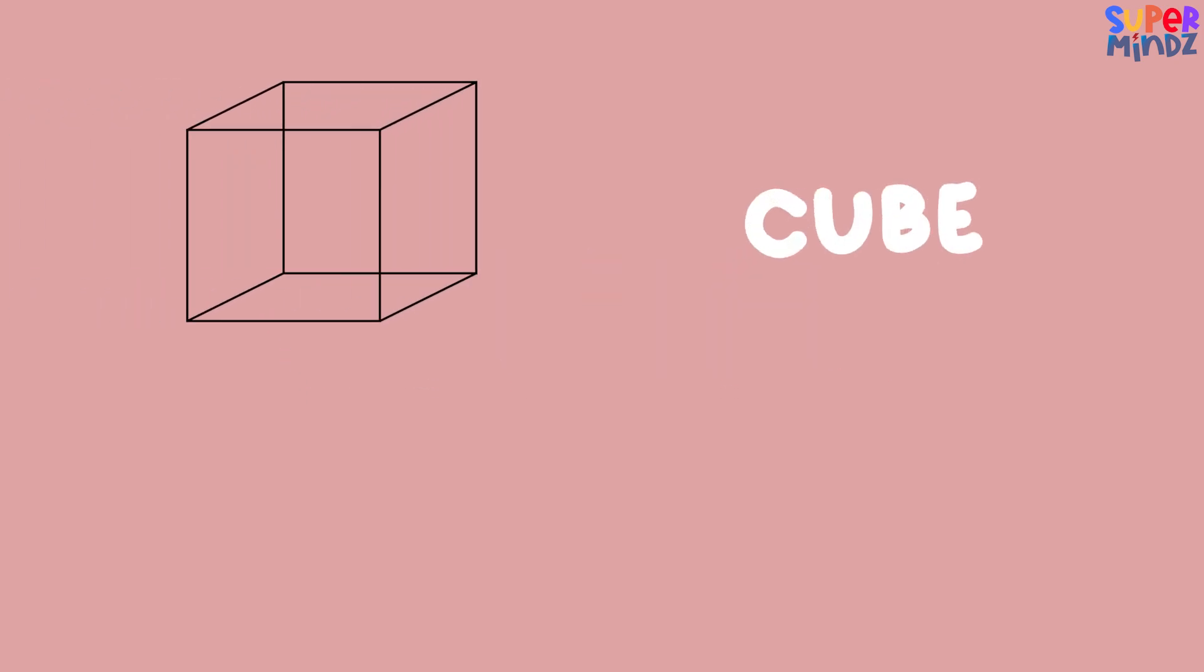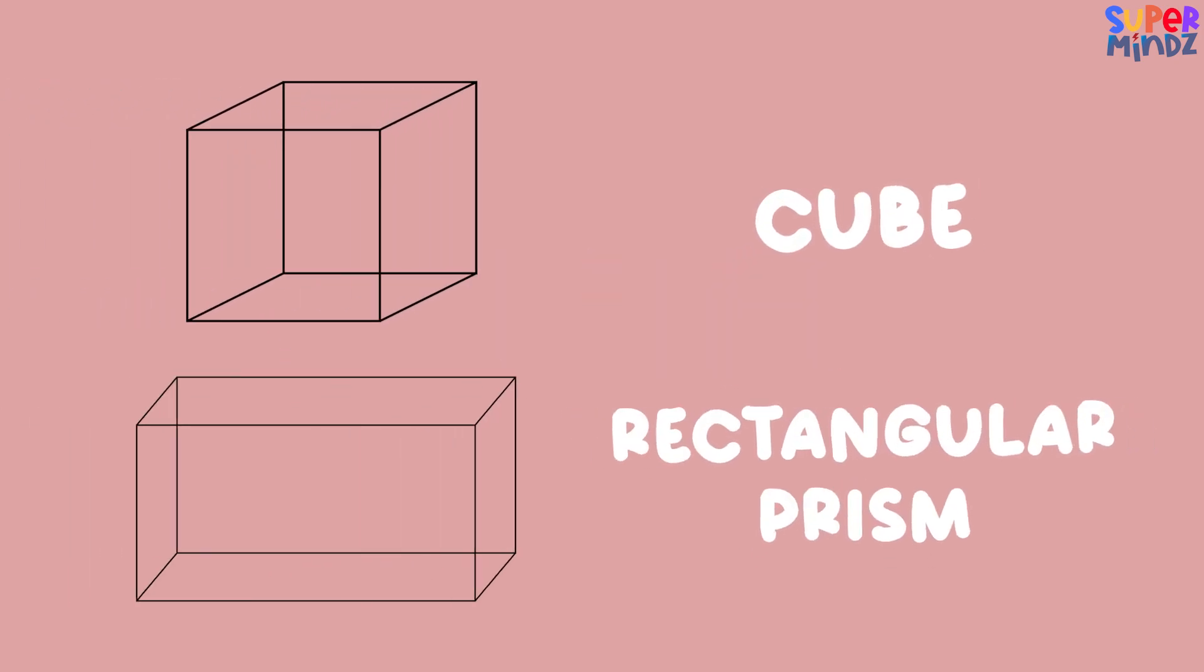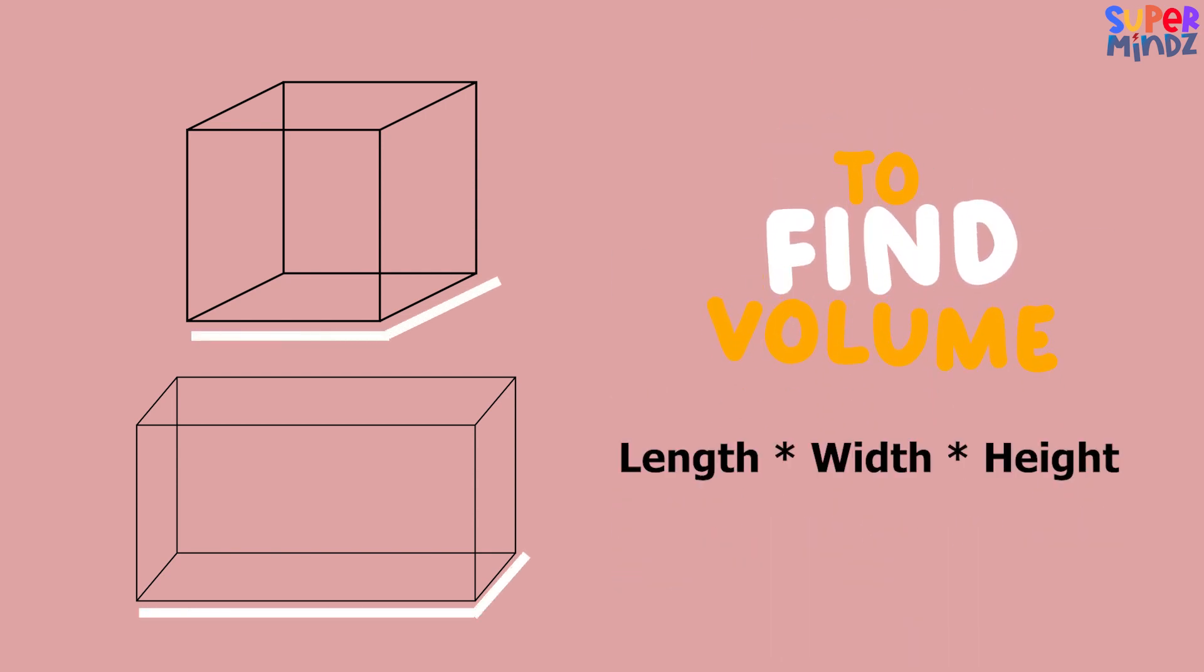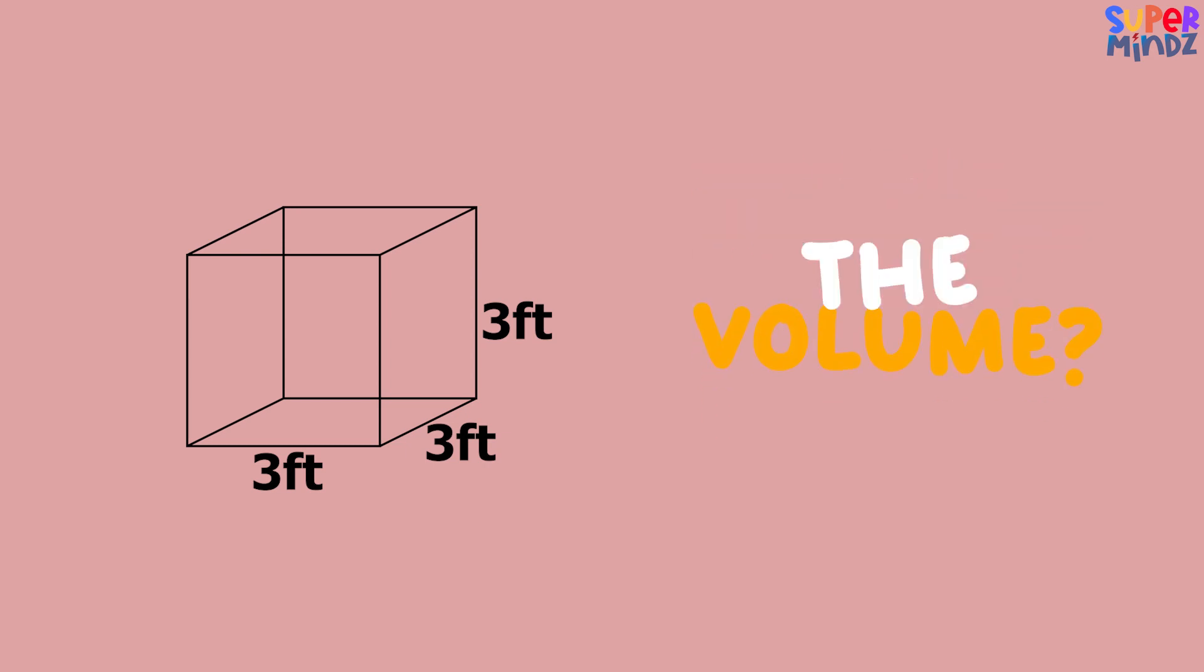we have a box shaped like a cube and a rectangular prism. To find volume, we simply multiply the length, width, and height together. If our box has all sides measuring three feet, what's the volume? That's right, it's three times three times three, which equals 27 cubic feet.